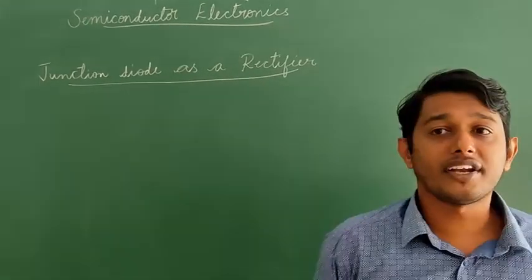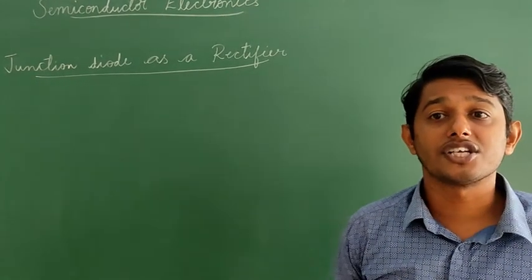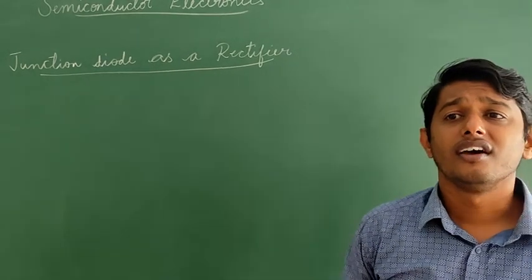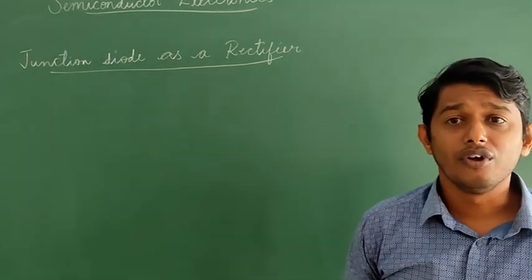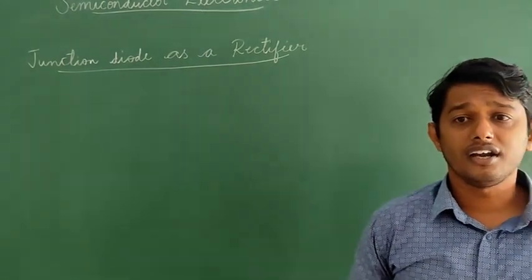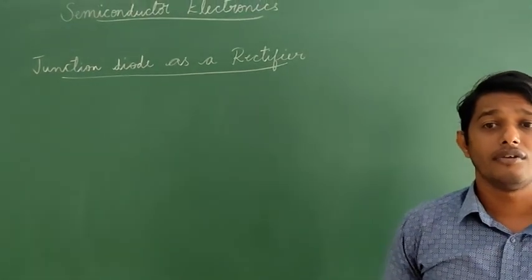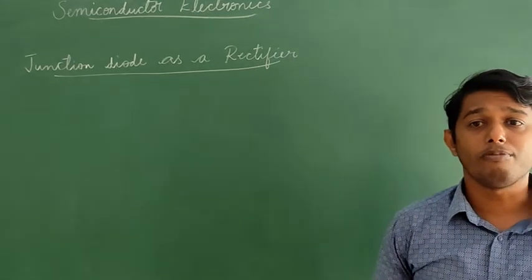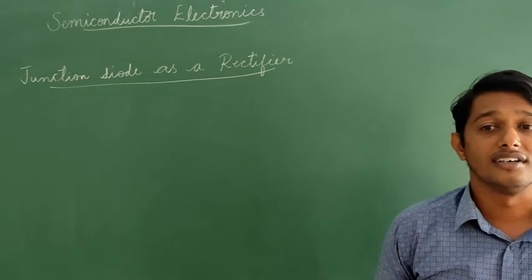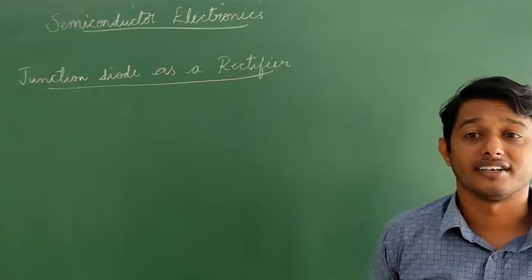Junction diode as a rectifier. From the VI characteristics of a junction diode, we see that it allows current to pass only when it is in the forward bias. If an alternating voltage is applied across the diode, the current flows only in the part of the cycle where the diode is forward biased.